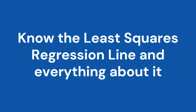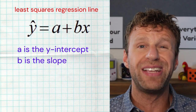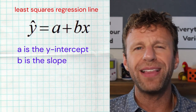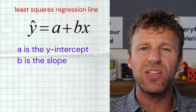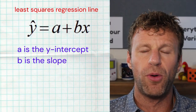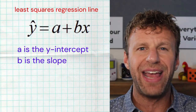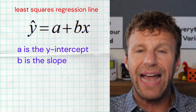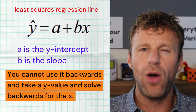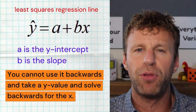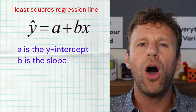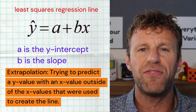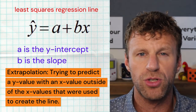Tip number five: know the least squares regression line. The formula is ŷ = a + bx. The hat on the y tells us it's a predicted value; a is the y-intercept, b is the slope, and x is the explanatory variable. Take a given x value, plug it in, and you get a predicted y value. Note that you cannot work it in reverse — you cannot plug in a ŷ and solve for x. Also be careful with extrapolation — you cannot plug in an x value outside the range of the data that generated the line.